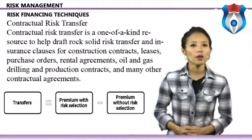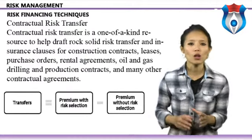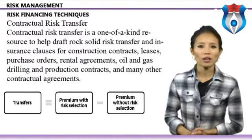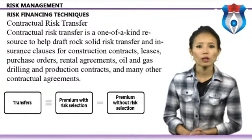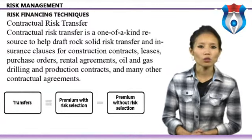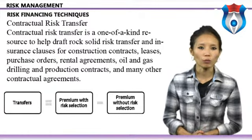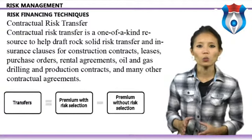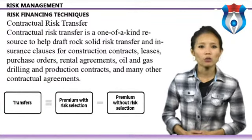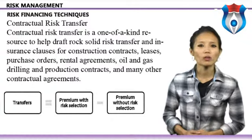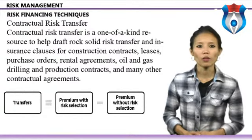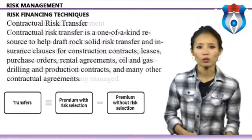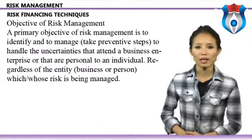Contractual risk transfer is a resource to help draft rock-solid risk transfer and insurance clauses for construction contracts, leases, purchase orders, rental agreements, oil and gas drilling contracts, and many other contractual agreements. It empowers contract drafters with model clauses using up-to-date insurance terminology rather than ambiguous and archaic language. Discussions and summaries of state statutes affecting contractual indemnity help ensure that hold-harmless clauses will be enforceable.